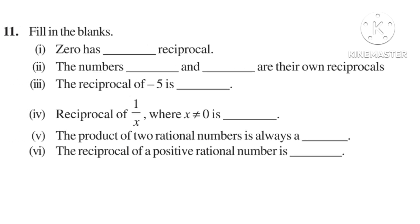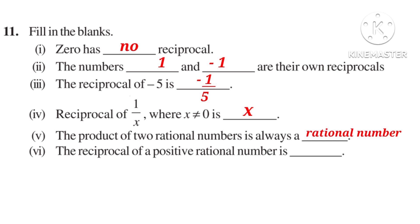Now, problem 11: fill in the blanks. Number 1: 0 has no reciprocal. Number 2: the numbers 1 and minus 1 are their own reciprocals. Number 3: the reciprocal of minus 5 is minus 1 by 5. Number 4: reciprocal of 1 by x is x. Number 5: the product of two rational numbers is always a rational number. Number 6: the reciprocal of a positive rational number is again a positive rational number.